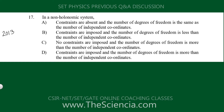This is another SET question — the 2013 June question. In this question, the options are very long, so read all the options first. Looking at option A and option C: in option A, no constraints are absent, and in option C, no constraints are imposed. So in both option A and C, there are no constraints.